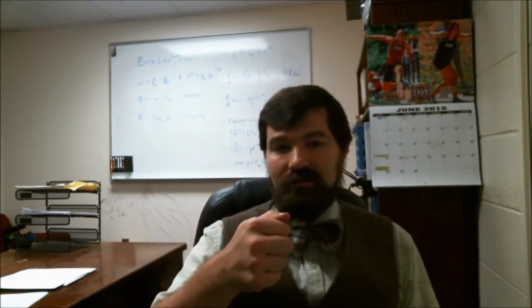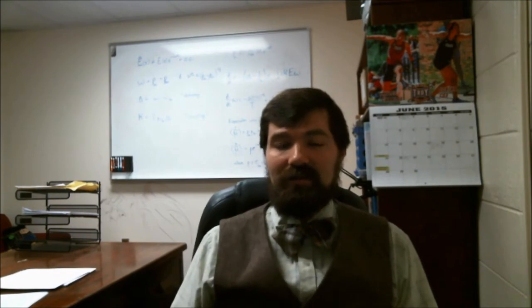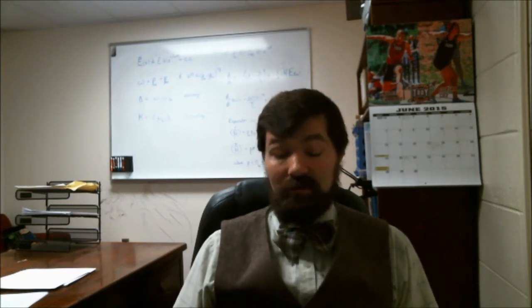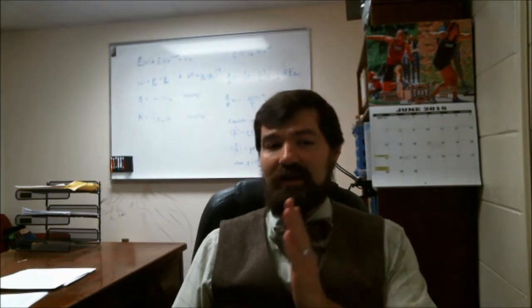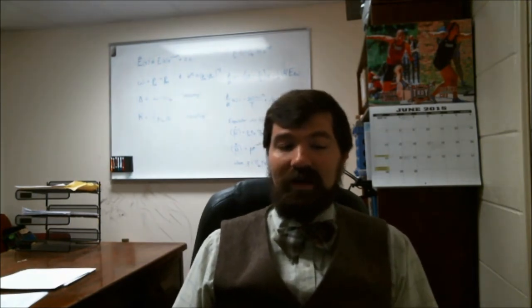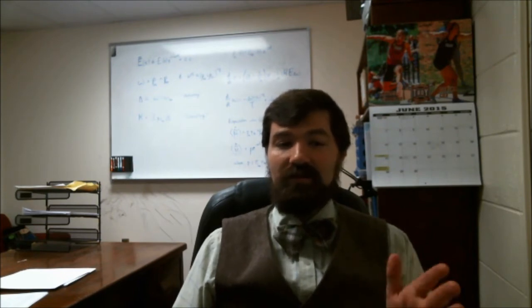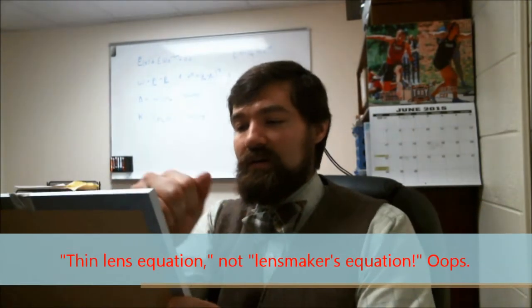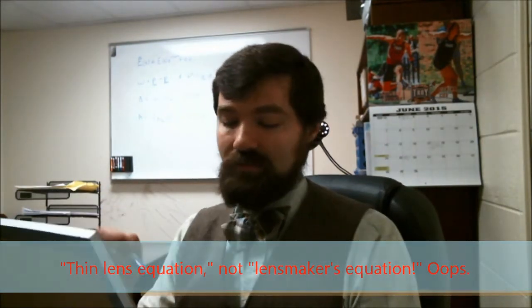You basically just move your viewing screen until you have the sharpest looking image on that viewing screen. And then you measure the distance between viewing screen and lens, and you measure the distance between lens and candle. And those two distances are the image distance and the object distance, respectively. And so from there, you use the lens makers equation to figure out where the focal length should be.